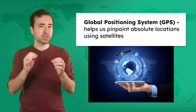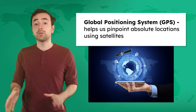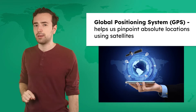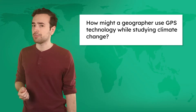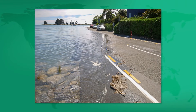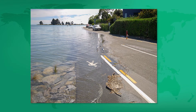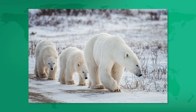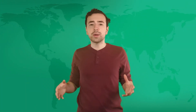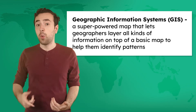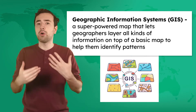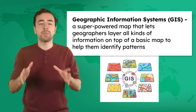GPS helps geographers pinpoint absolute locations using satellites. While remote sensing helps us see what is happening on Earth's surface, GPS allows us to pinpoint where things are happening. How might a geographer use GPS technology while studying climate change? Well, they might use GPS to keep track of rising sea levels, or to track the movement of endangered species as their habitats shift. But GPS doesn't work alone. When we combine GPS with other data, we get GIS, or Geographic Information Systems.